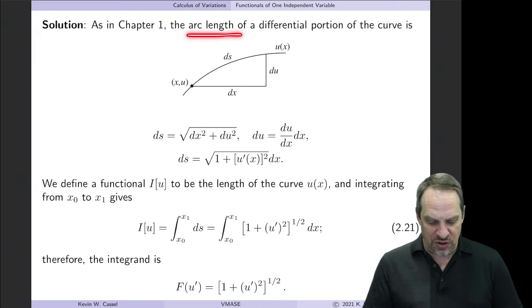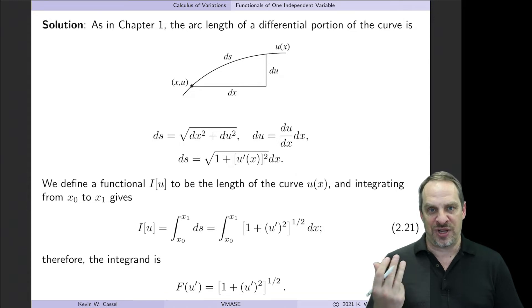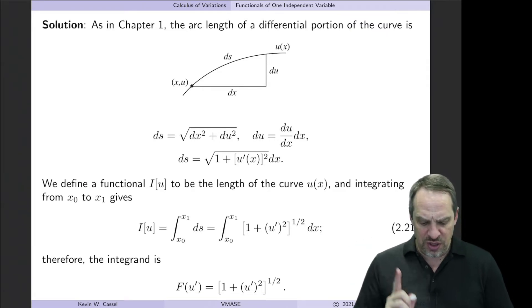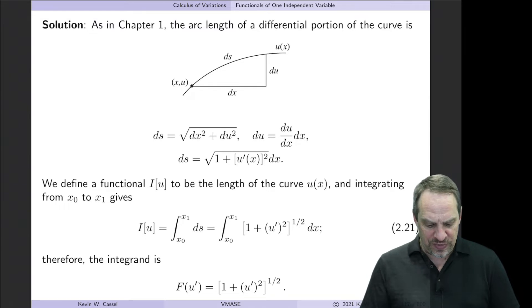We're going to take a closer look at that arc length of a little differential portion of our curve. We use this in all three of our motivational examples in Chapter 1, but we're going to go through it here in a little bit more detail. Let's say we're at a point (x, u) along our path. ds is the differential arc length of a little tiny infinitesimal segment of our curve u(x). That has components dx and du.